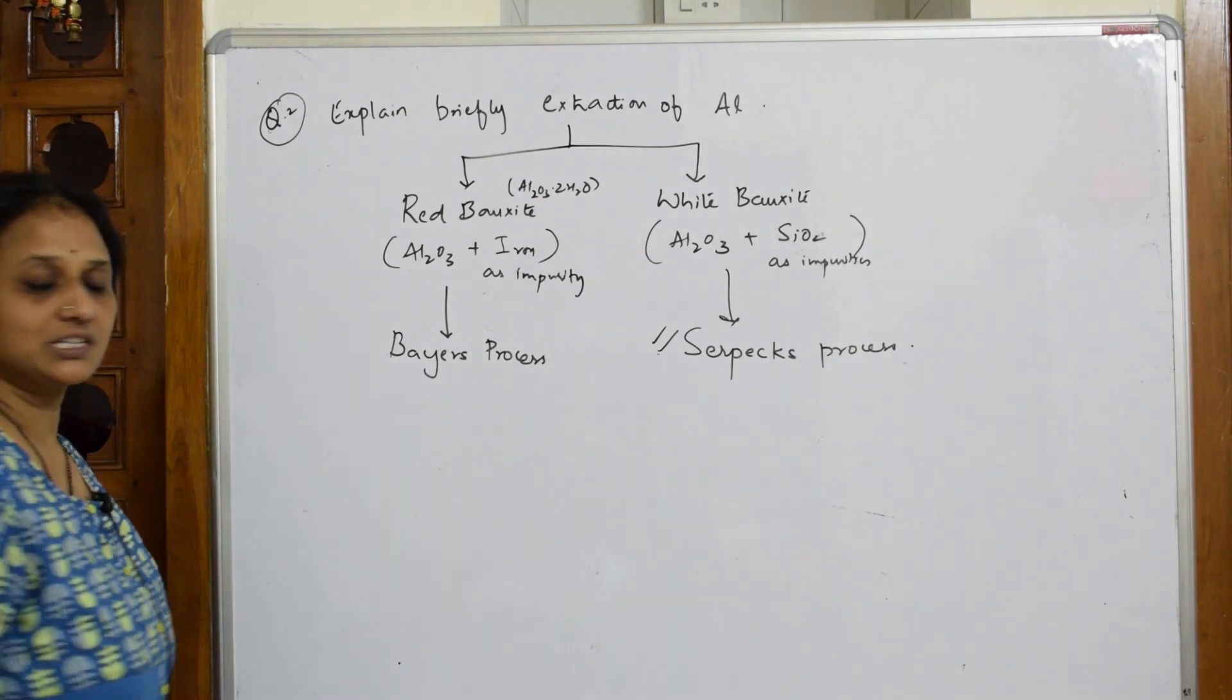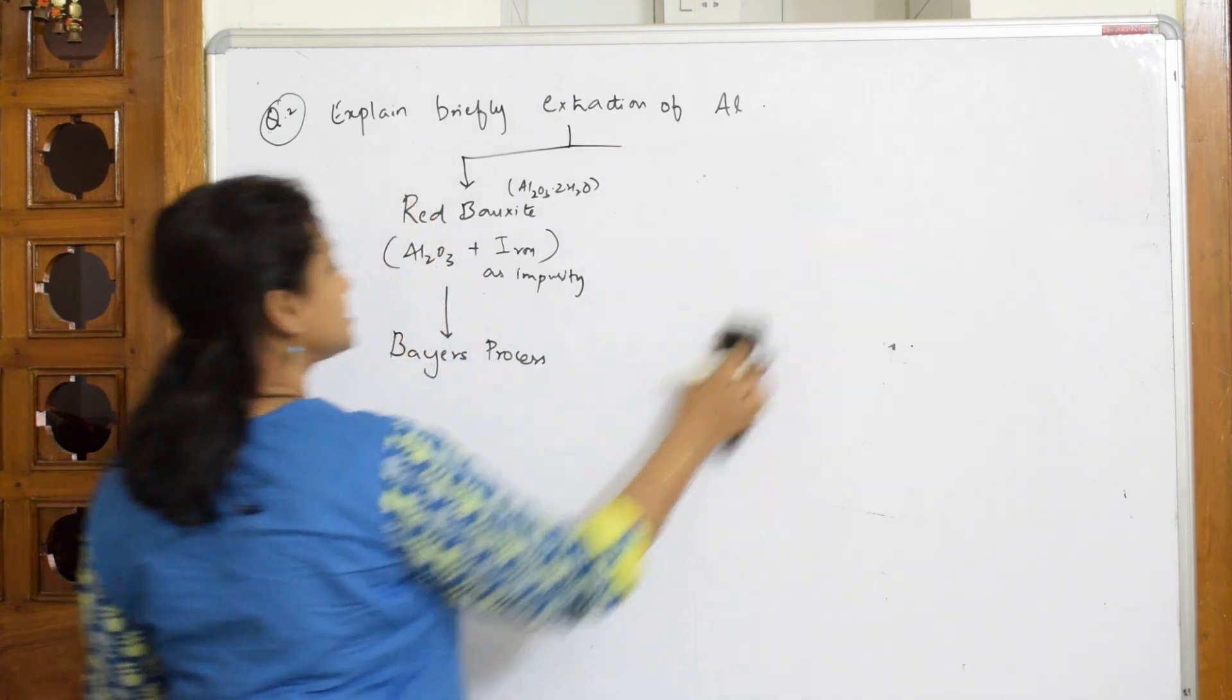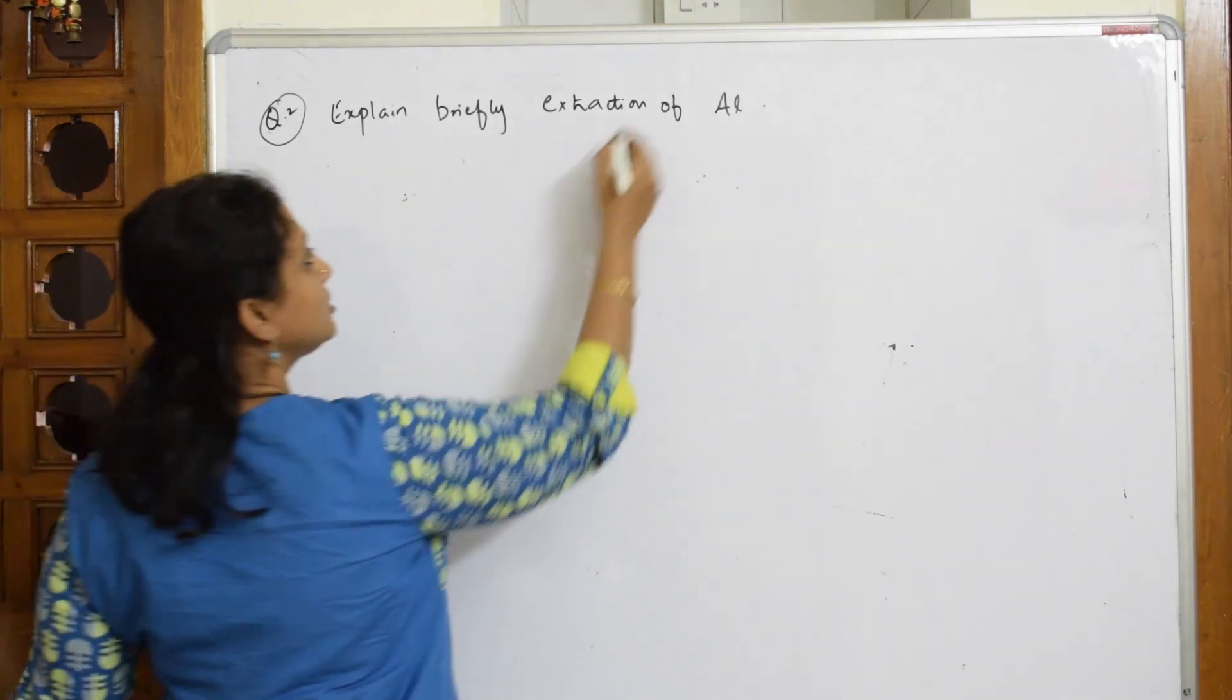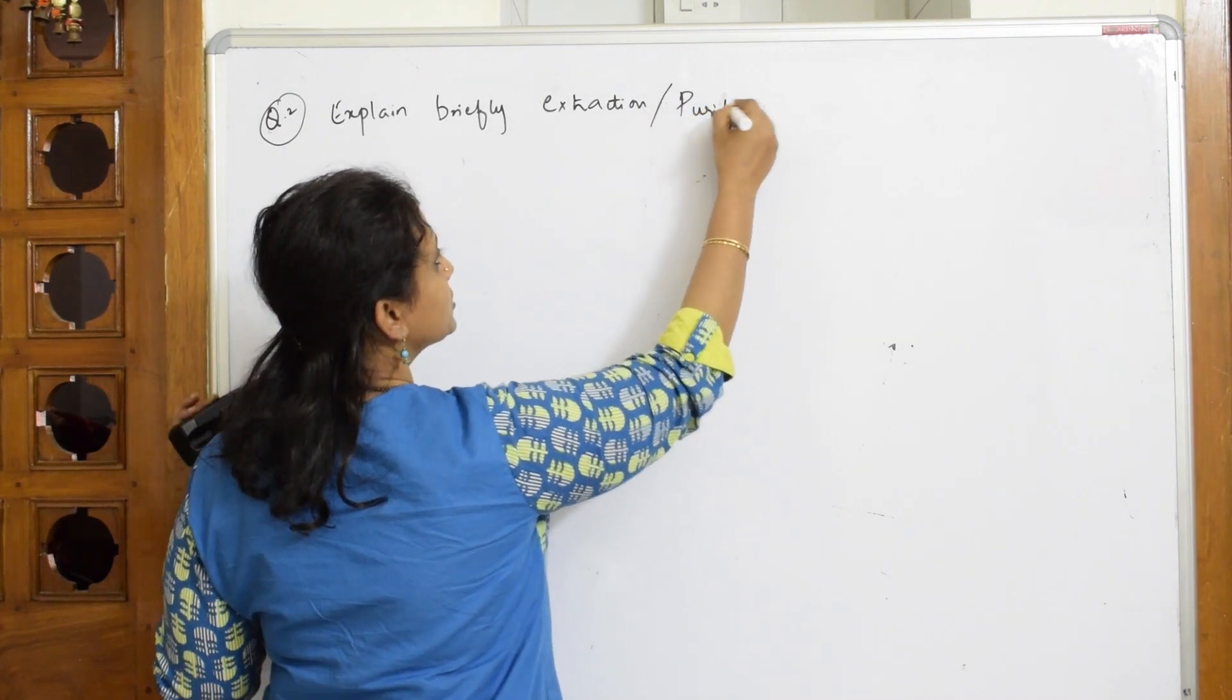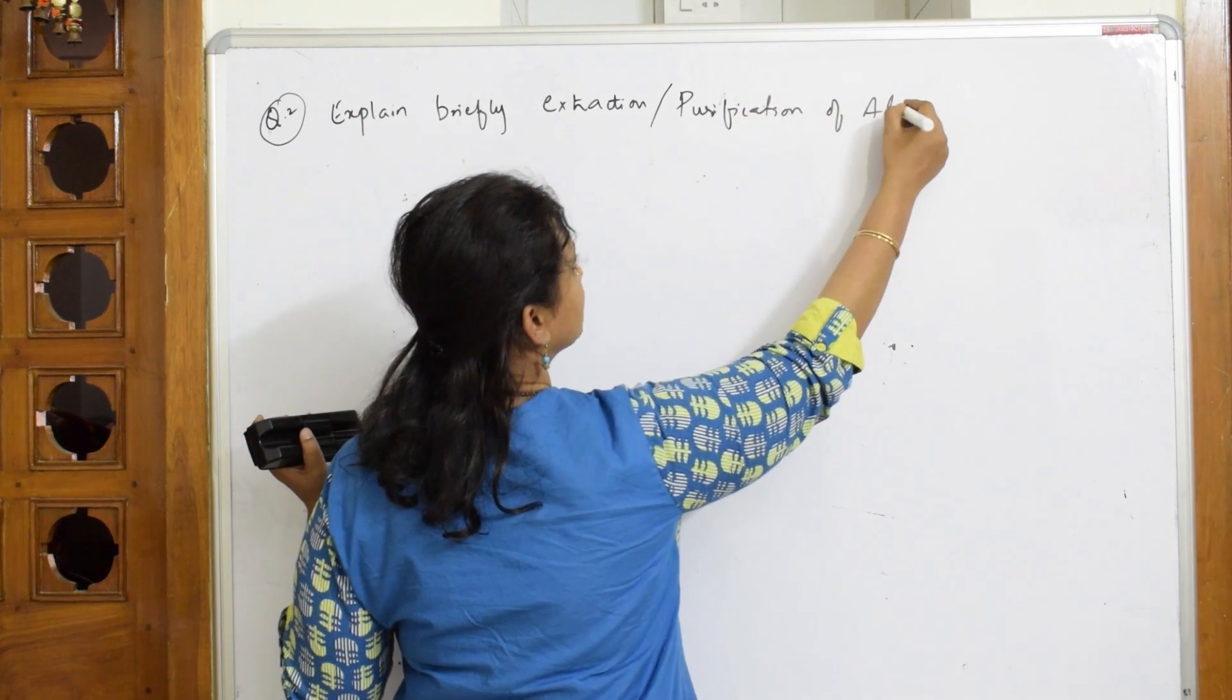So let us learn what is Bayer's process. Now I said I have to separate. Let us start with the Bayer's process and see what steps are involved in that. Now extraction or purification of aluminium.